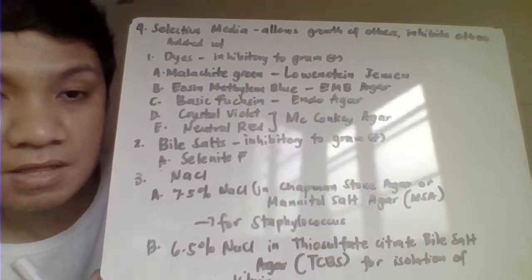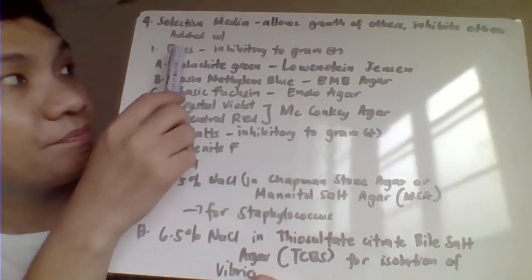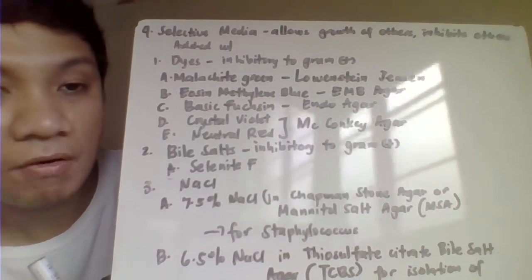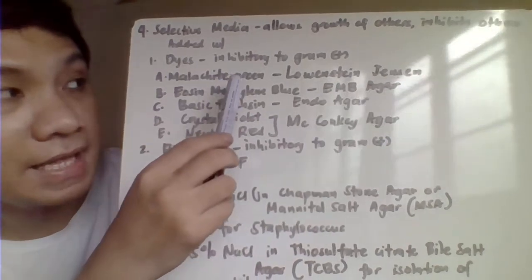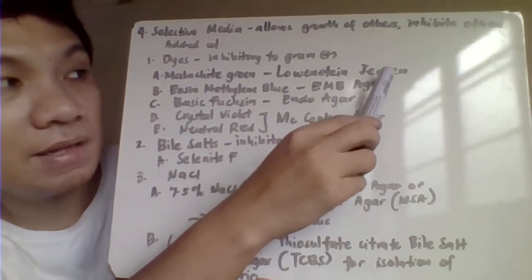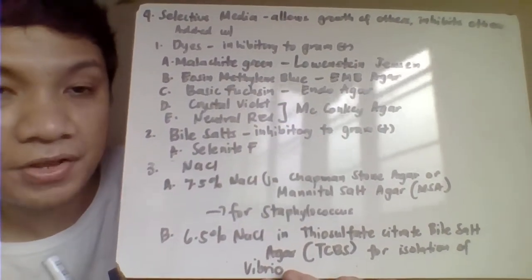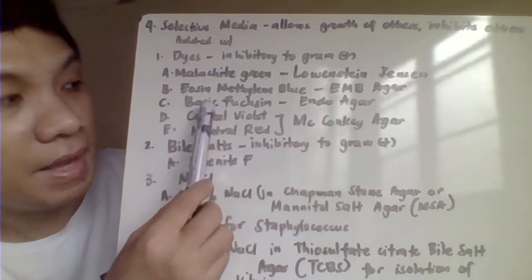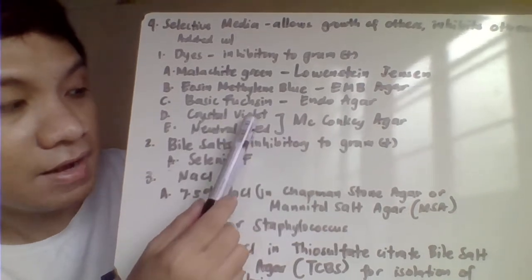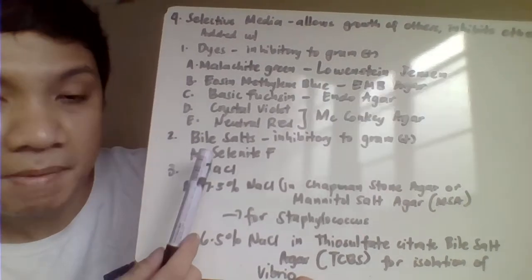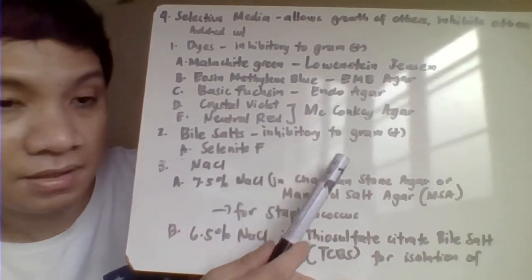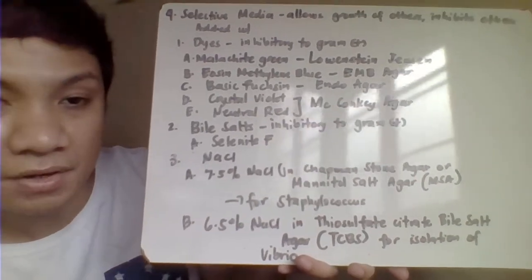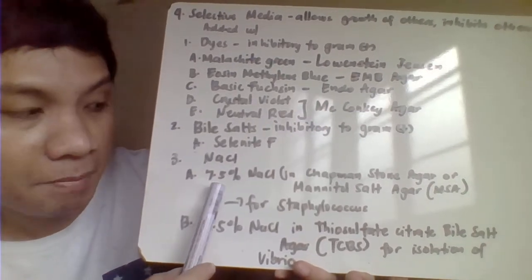Selective culture media allows the growth of some bacteria while inhibiting others. Selectivity can be achieved by adding dyes — most dyes are inhibitory to gram-positive organisms. For example, malachite green is incorporated in Lowenstein-Jensen medium for Mycobacterium tuberculosis, and eosin methylene blue is used in EMB agar. Crystal violet and neutral red are in MacConkey agar. Bile salts are inhibitory to gram-positive organisms, as seen in selenite F.